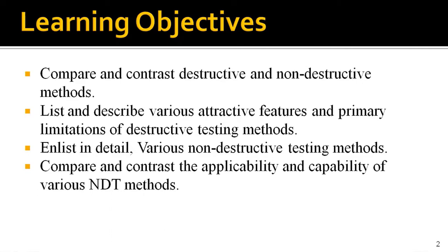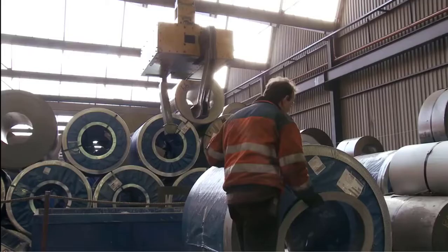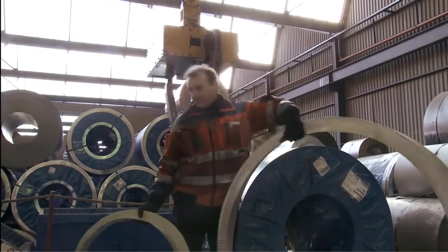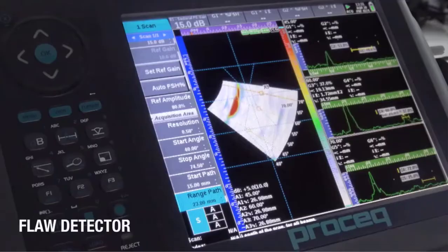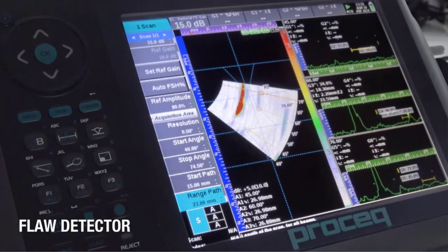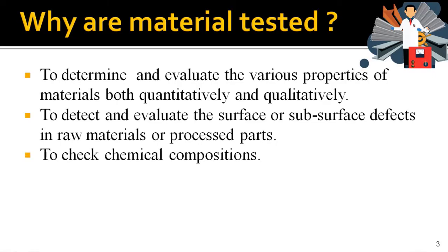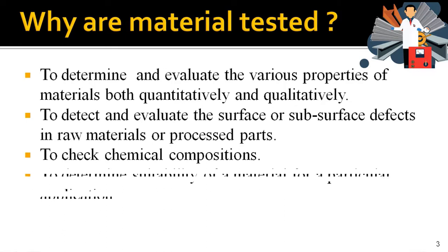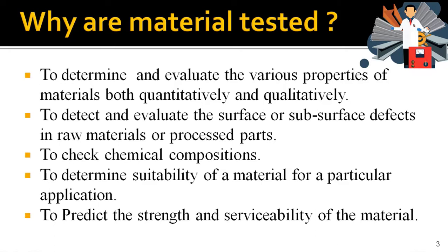Before starting non-destructive testing, let me ask you a question: why are materials tested? In general, we test materials to determine and evaluate various properties of a material both qualitatively and quantitatively, to detect and evaluate surface or subsurface defects in raw materials or processed parts, to check chemical compositions, to determine suitability of a material for a particular application, and to predict the strength and serviceability of the material.